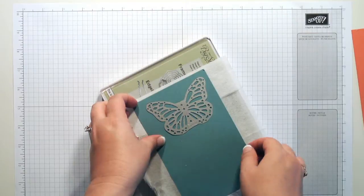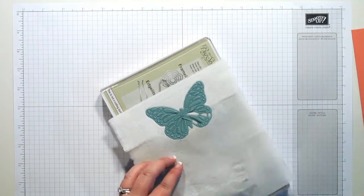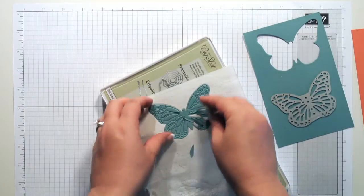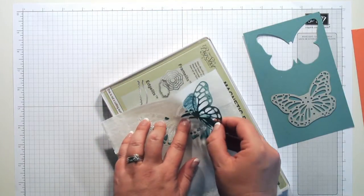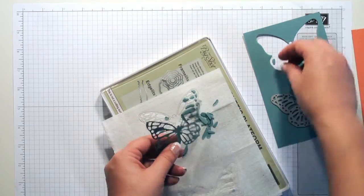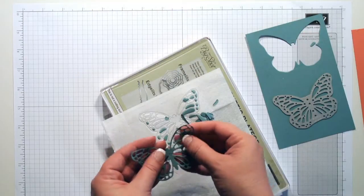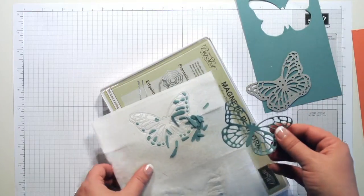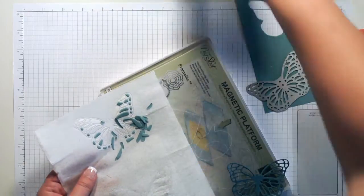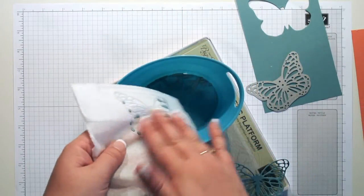So you can see here my butterfly image just popped right out, and then see how those little holes and nooks and crannies they just fall out really easily.